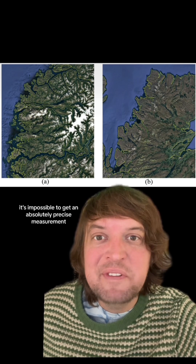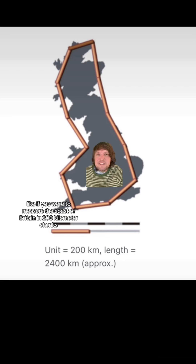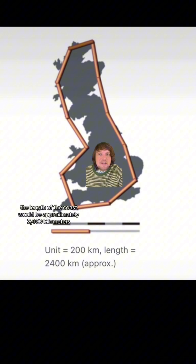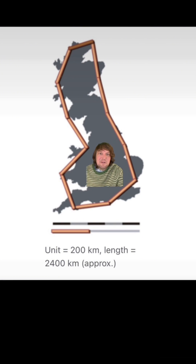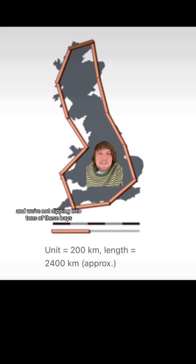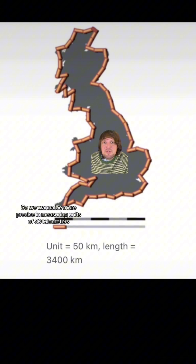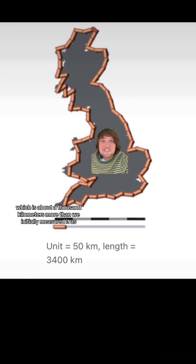It's impossible to get an absolutely precise measurement of the length of a coastline. If you were to measure the coast of Britain in 200-kilometer chunks, the length would be approximately 2,400 kilometers. But look at all this stuff we're missing — a bunch of this land is getting cut and we're not dipping into tons of these bays. So if we want to be more precise, using units of 50 kilometers, the coast is measured to be about 3,400 kilometers — about a thousand kilometers more than we initially measured. But we're still not measuring a bunch of things.